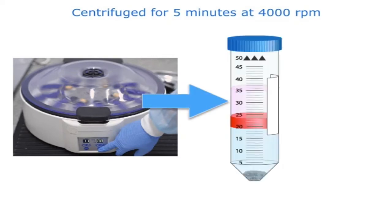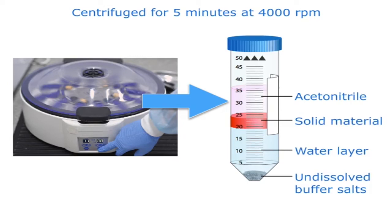Four layers will be apparent after centrifugation. The top layer is acetonitrile which contains the analytes of interest. The next layer is solid material from the sample. The third layer is the water layer which will contain polar interferences from the sample such as sugars. Without the water layer, these interferences would be present in the acetonitrile layer. The bottom layer consists of undissolved buffer salts.